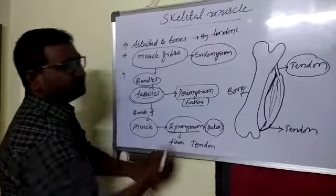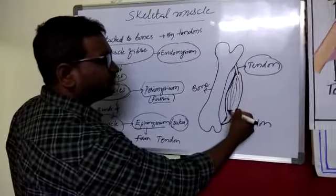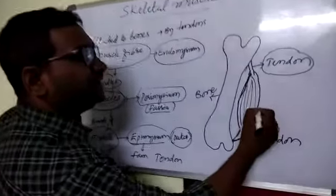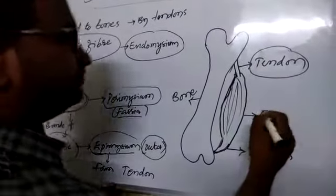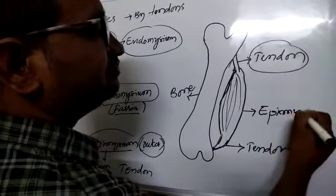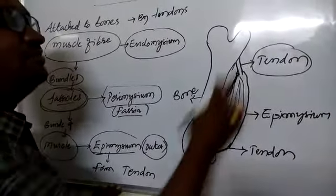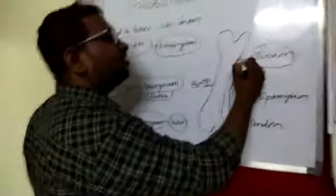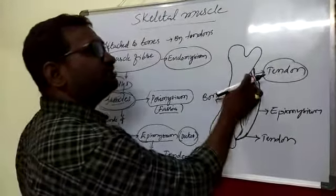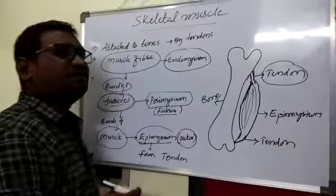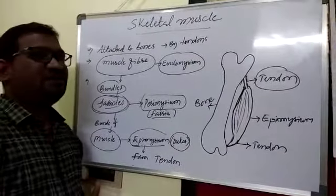This epimysium extends outwards and forms a chord-like structure called tendon. This tendon is attached to the skeletal muscles and connects the muscle to the bone.